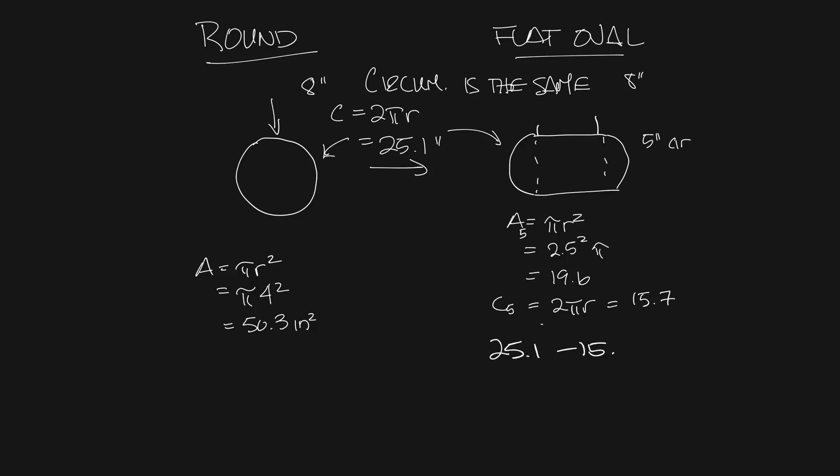So now we have 25.1 being the circumference of the whole thing minus 15.7, divide that by 2 gives you what each side over here is, so 4.7 on each side. So now the area of this rectangle is 4.7 times 5 and that's 23.5 square inches.